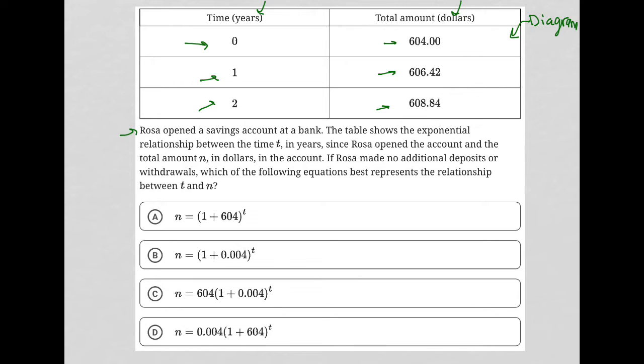So the question here says Rosa opened a savings account at a bank. The table shows the exponential relationship between the time T in years since Rosa opened the account and the total amount in dollars in the account. If Rosa made no additional deposits or withdrawals, which of the following equations best represents the relationship between T and N?